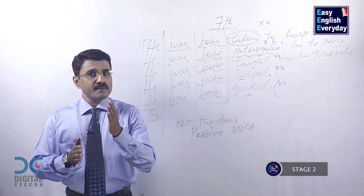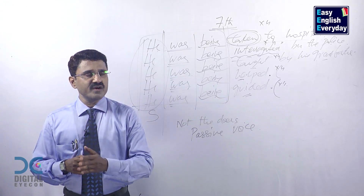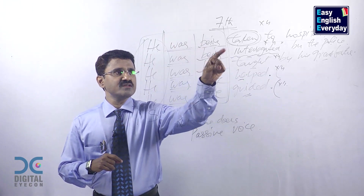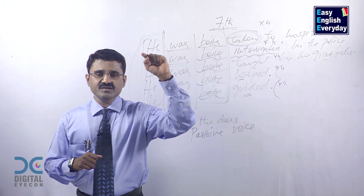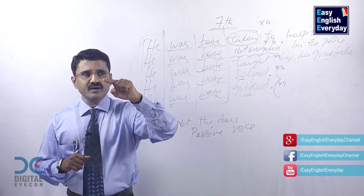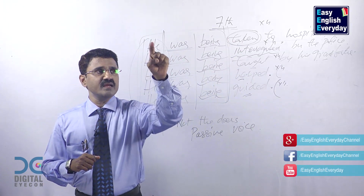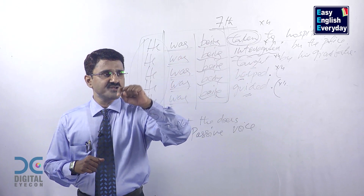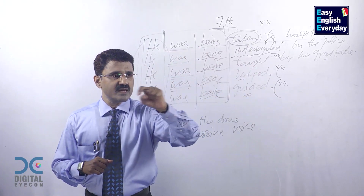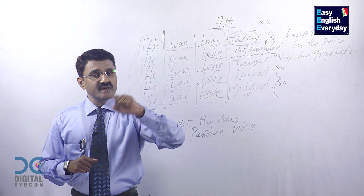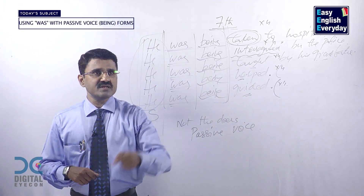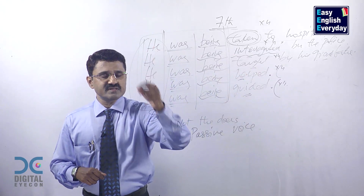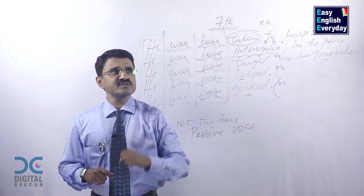In English grammar, this is called past continuous passive voice. If you go to the background of the first example — he was being taken to hospital by the taxi driver — the taxi driver was taking him to hospital, police were interrogating him, grandfather was teaching him, somebody was helping him, mother was guiding him. In those active sentences, the doers are getting importance. In the passive sentences, the doers are not getting importance — this person is getting the importance. This is the situation to use this structure. So this is the seventh use of was.